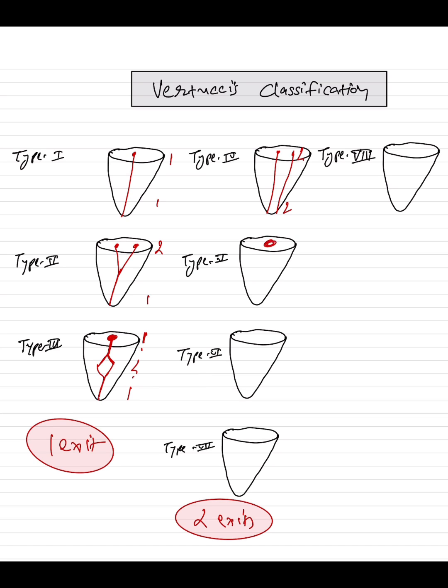Then comes type six. In the beginning there are two canals. These two canals are fusing together, and by the time of exit they again become two separate canals, so it is two-one-two in type six.